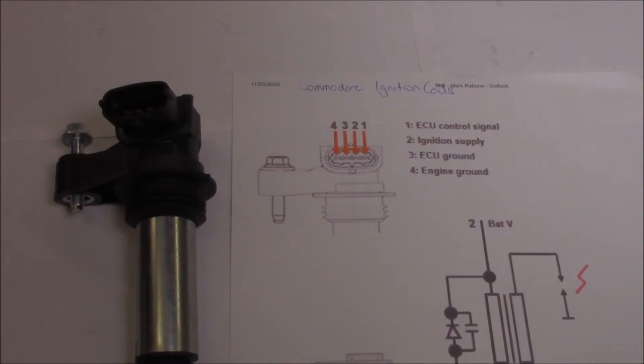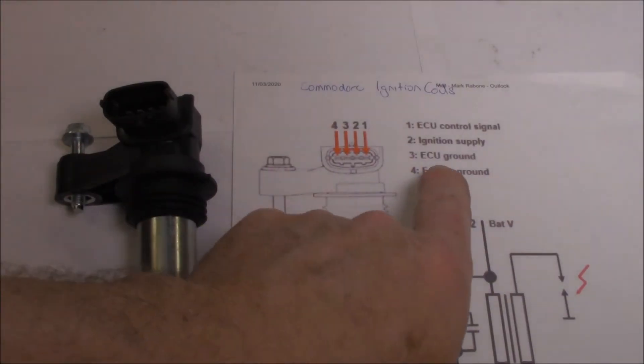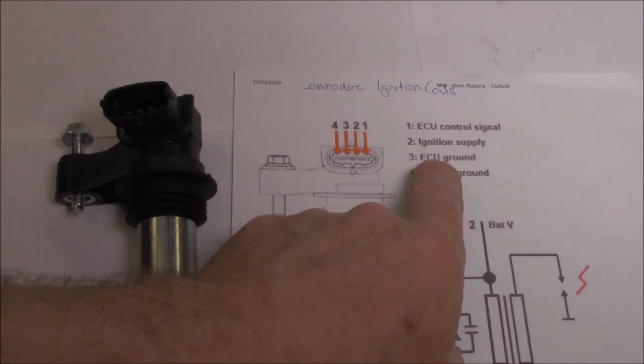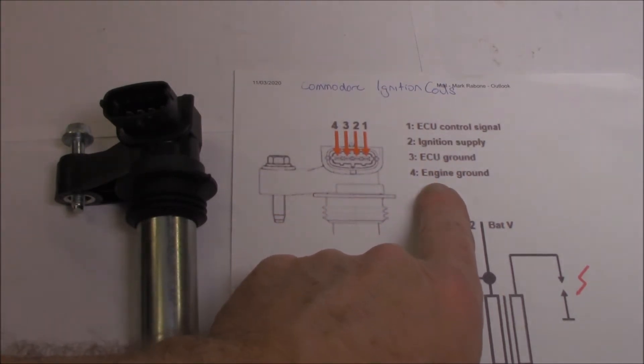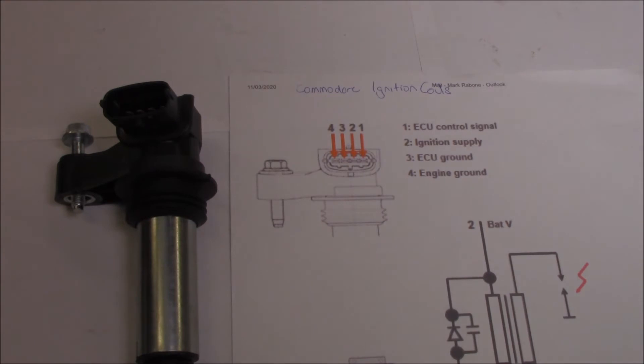As you can see, this is a little bit different to what they normally are. This one actually has two grounds. One is an ECU ground and the other is an engine ground. And it's okay to tie the two together and then stick them on a battery negative.